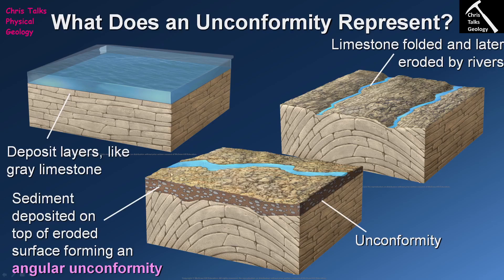In this diagram we have a type of unconformity where layers of rock below the unconformity have been deformed — they're tilted, they have a dip — while the layer of rock above the unconformity is horizontal. When we have an unconformity where the layers below have been tilted and the layers above have not been tilted, this is a specific type called an angular unconformity. In angular unconformities, layers below will always be tilted and layers above will always be horizontal.